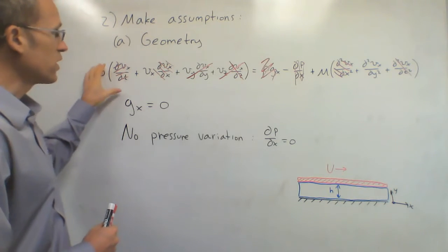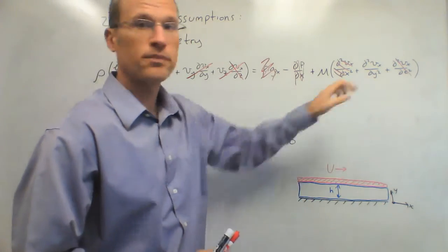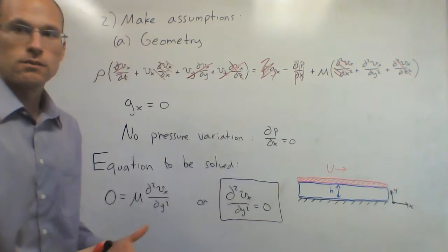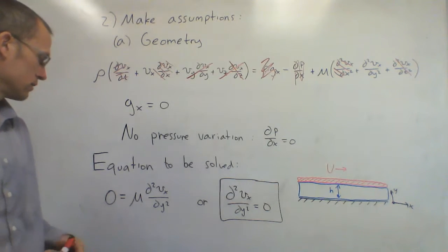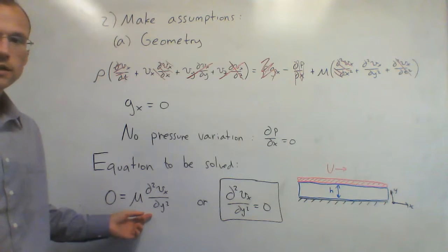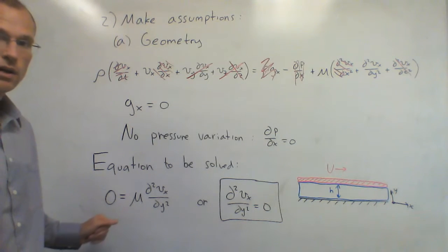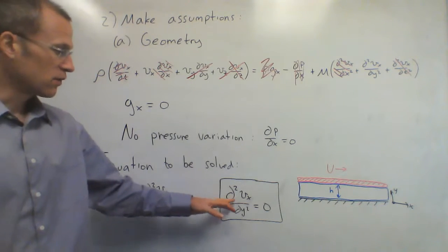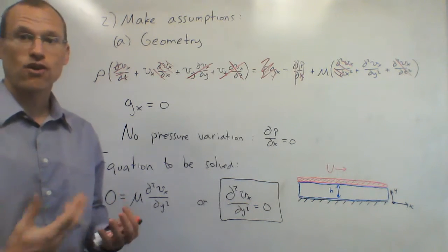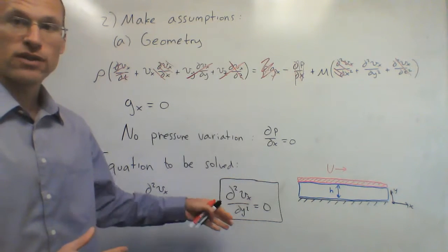After applying all those assumptions, the entire left-hand side is zero, and the only remaining term on the right-hand side is mu times d²Vx/dy². So what we're left with is: 0 = mu * d²Vx/dy². Dividing by mu, this simplifies to d²Vx/dy² = 0. From the long, complicated Navier-Stokes equations, this is all we need to solve.